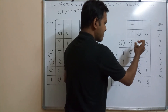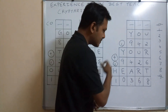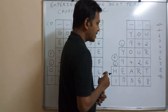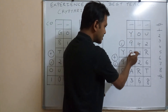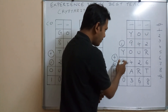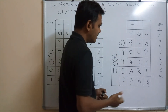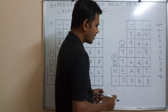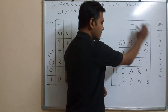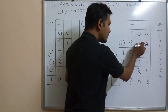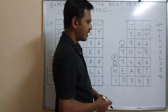Writing other values like 5 for O with or without carry over will not satisfy the rules of cryptarithmetic. The same alphabet must have the same number (e.g., 9 for Y everywhere, 4 for O everywhere), and different alphabets must have different numbers (4 and 2 are different). So the answer for YOU + YOUR = HARD is 942 + 9426 = 10368. Thank you for watching this video.